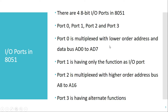Port 0 is multiplexed with lower order addresses and data bus, that is A0 to A7. So Port 0 has two functions: it can be used as a simple digital input/output port, or it can act as A0 to A7, that is the lower order address and data bus. Whenever we want to interface external memory to 8051, the lower order address bus is available on Port 0. The lower 8 address lines are on Port 0, and at the same time the data bus is also present on Port 0. We have to demultiplex the address and data using an external latch.